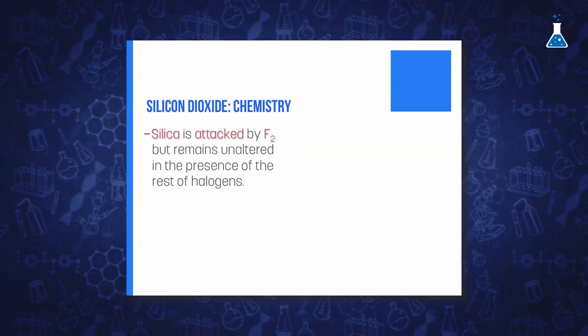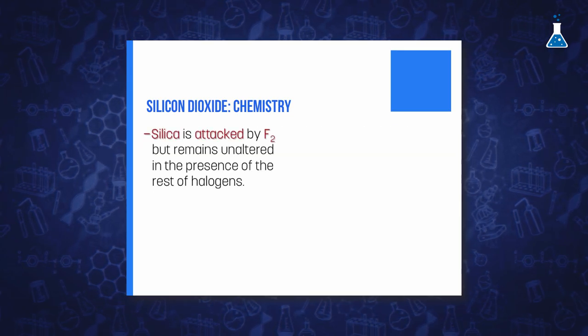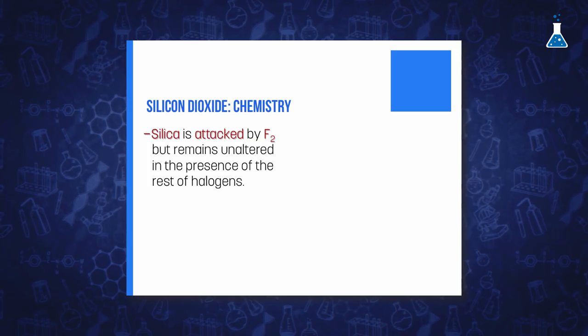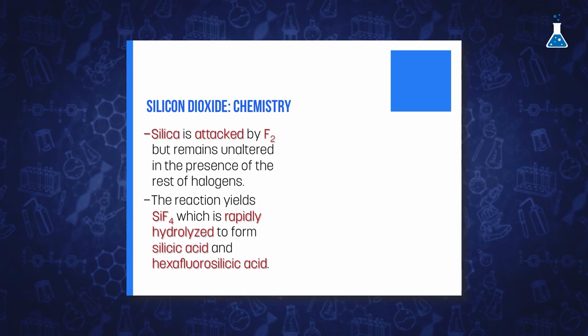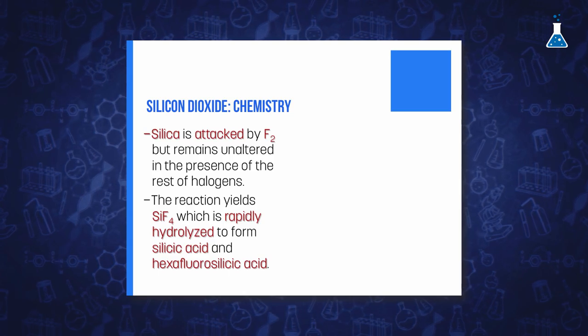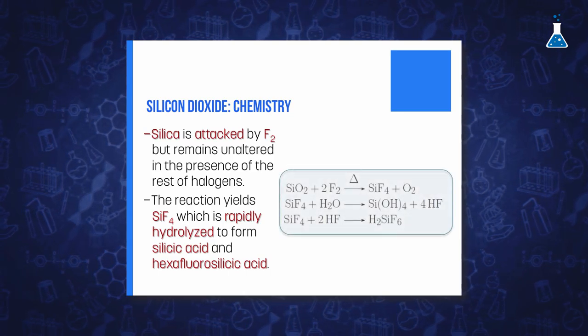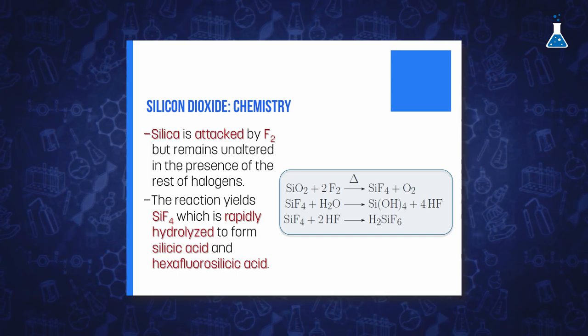In addition, silica is attacked by fluorine, but it remains unaltered in the presence of the rest of halogens. The reaction gives tetrafluorosilane, which in contact with water rapidly hydrolyzes to form silicic acid and hexafluorosilicic acid.